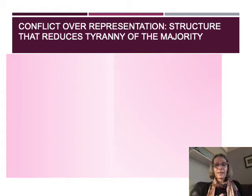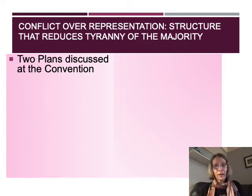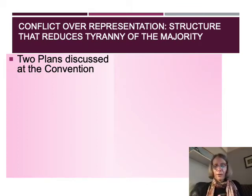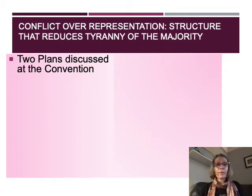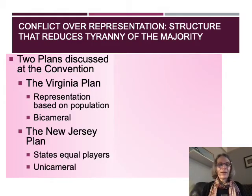One mechanism in our Constitution is putting the brakes on majority rule. While majority rule is good in democracy, sometimes the majority can trample the rights of those not in the majority. This came to a head at the Constitutional Convention in debates about how Congress should be organized. There were two plans discussed: the Virginia plan and the New Jersey plan.